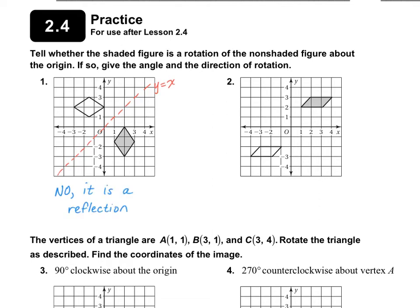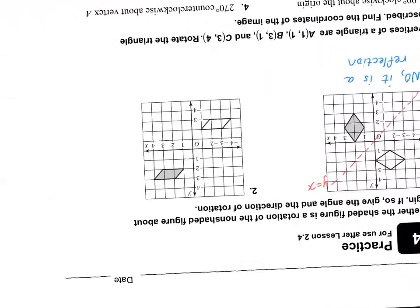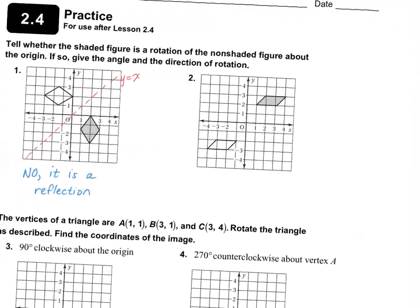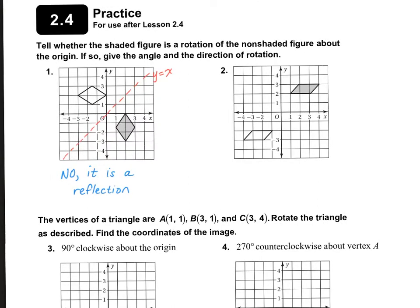Let's take a look at number two. Tell whether this shaded figure here is a rotation of this one about the origin. This one does look like a rotation. One way to check is if you were to turn it — in this case, we would turn our whole entire page upside down. Does it look the same if we turn our whole entire page upside down? Yes, it does. And since I turned it upside down, that means it's a 180-degree rotation. So we're going to say yes, this is a rotation about the origin, and it's 180 degrees. I wrote 180 degrees clockwise, but it doesn't need to be clockwise — when you have 180 degrees, it could easily go counterclockwise instead.